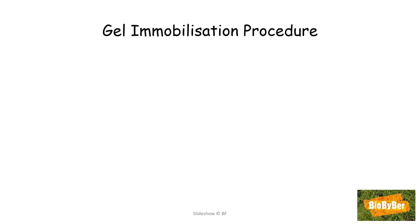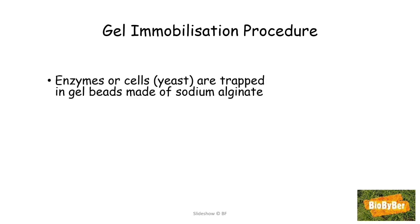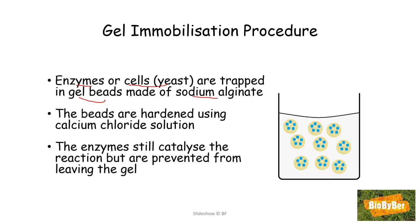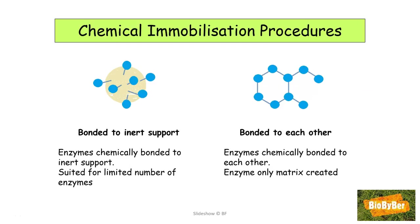Let's have a closer look at the gel immobilization procedure. Enzymes, or on occasion cells like yeast, are trapped in jelly-like beads made of sodium alginate. The beads are hardened somewhat using calcium chloride solution. The enzymes will still catalyse the reaction but are prevented from leaving the gel, and thus can be reused.